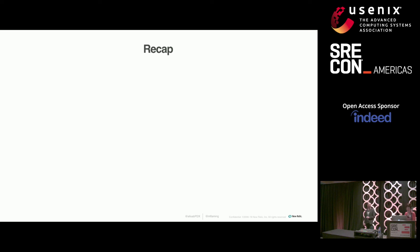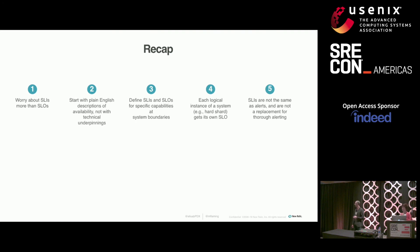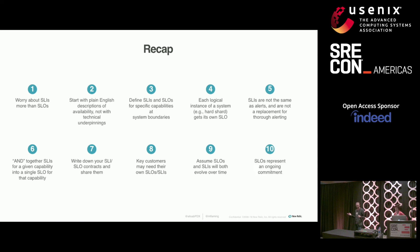Let's recap. Worry about SLIs more than SLOs. Start with plain English descriptions of availability, not technical underpinnings. Define SLIs and SLOs for components at system boundaries. Each logical instance of a system — like each hard shard — might need its own SLI and SLO. SLIs are not the same as alerts. You can AND together your SLIs to create a compound SLO. Write down your SLI and SLO contracts and share them — not a secret. Key customers might need their own SLIs and SLOs. Assume your SLOs and SLIs will evolve over time. And remember that SLOs represent an ongoing commitment.